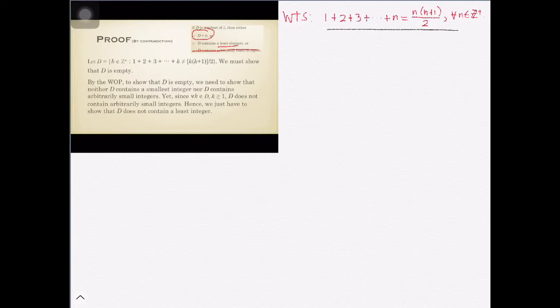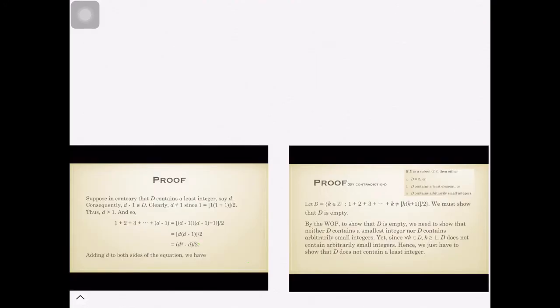Suppose D does contain a least integer. Suppose, in contrary, that D contains a least integer, say small d. Knowing that d is already the least integer, consequently one unit lesser than d — that is, d minus one — would not be an element of D.